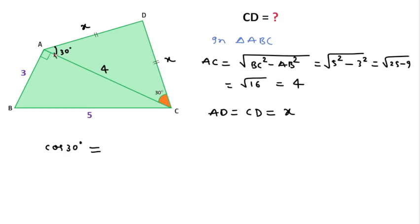That is 4 squared plus X squared minus X squared, over 2 times 4 times X.